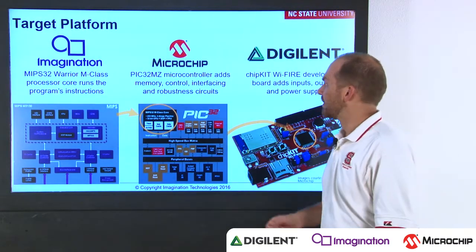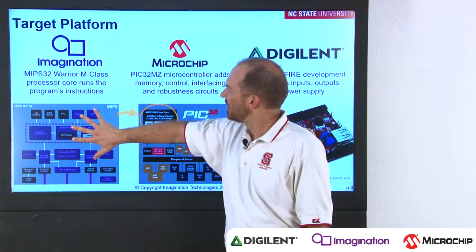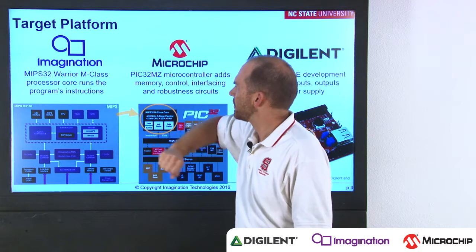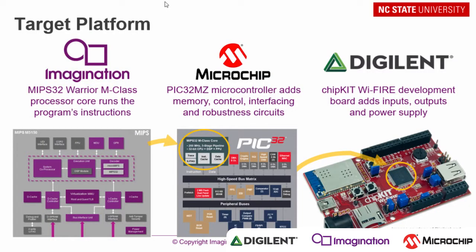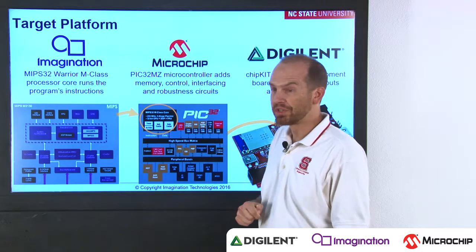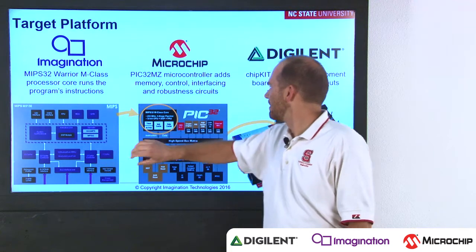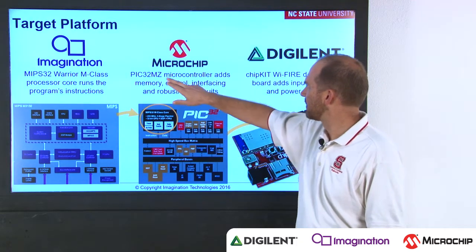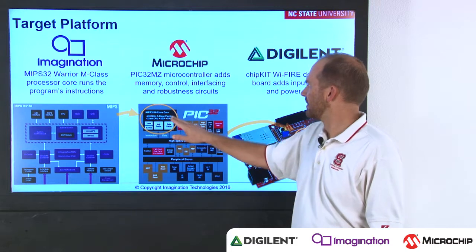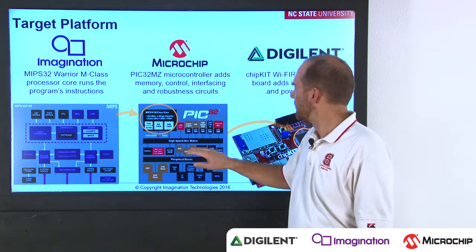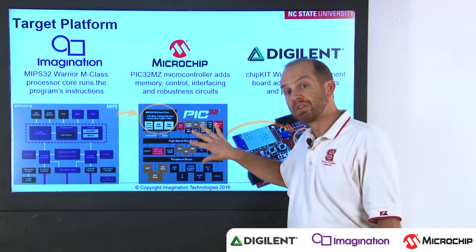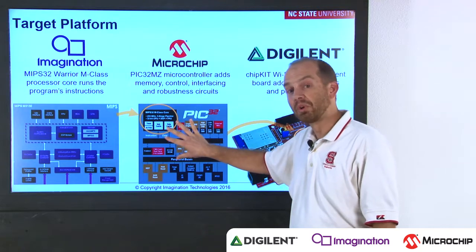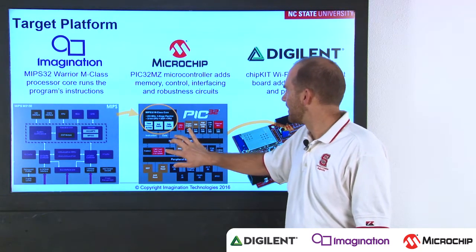The target platform we're using for this class starts with a processor core from Imagination Technologies — a MIPS32 CPU core. This is a very fast CPU running at up to 200 million instructions per second. It has support for hardware floating point and quite a few other high-performance features. That CPU core is contained within a PIC32 microcontroller from Microchip — the PIC32MZ series — which has the MIPS32 core plus peripherals for interfacing with the external world, offloading work from the processor, and on-chip memory.